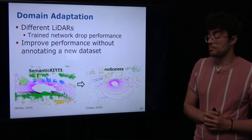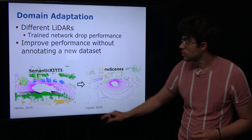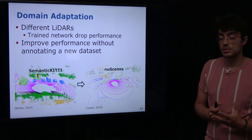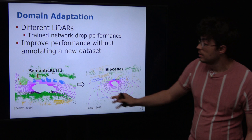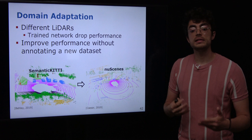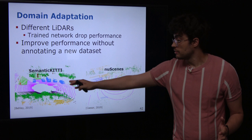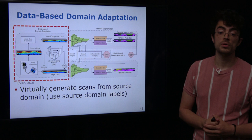For example, we have two LiDAR datasets — Semantic KITTI and nuScenes. If we look closely, Semantic KITTI is denser than nuScenes because it was collected with a higher resolution LiDAR, while nuScenes has fewer bins and is much sparser. This is one example of domain shift, and the problem we want to tackle is: given a trained model on Semantic KITTI, how can it also perform well when predicting scenes in nuScenes?